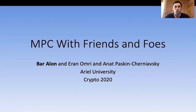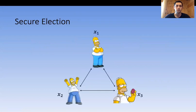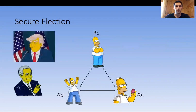Hello everyone. Today I'm going to talk about MPC with friends and foes, and this is joint work with Ferran Omri and Danat Paskin-Czernyavsky. I'll start with an example — specifically secure election. Let's say we have three parties, each choosing between two candidates, and they know that at most one of them is corrupted.